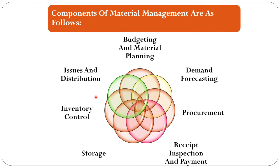The process of material management involves seven components or steps: first, planning of budget and material; second, demand forecasting; third, requirement; fourth, receipt, inspection and payment; fifth, storage; sixth, inventory control; and finally, issues and distribution.